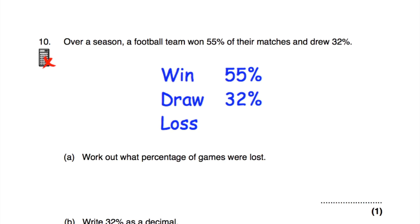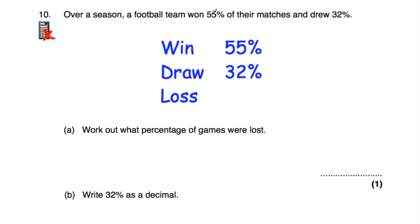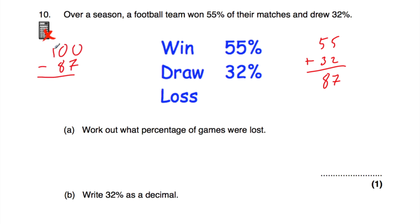Question number ten: over a season, a football team won 55% of their matches and drew 32%. Part A asks for the percentage of matches lost. Since they either win, draw, or lose, these percentages must add to 100%. First, 55 plus 32 equals 87%. Then 100 subtract 87 gives 13%. So they lost 13% of their matches. We can check: 55 plus 32 plus 13 equals 100 — correct.